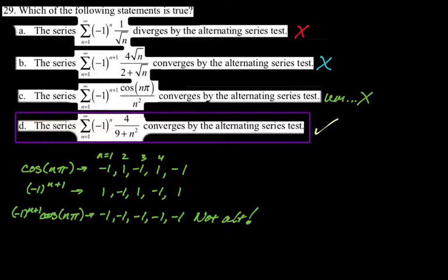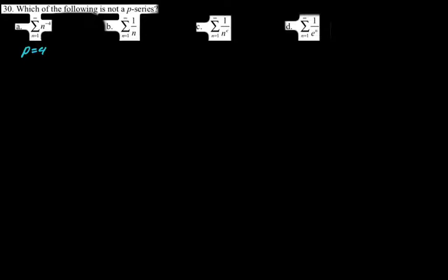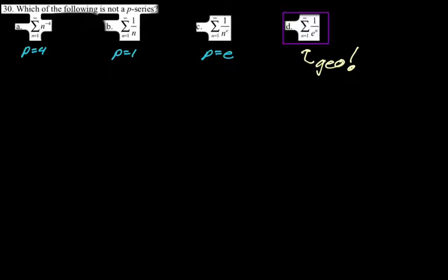Next: which of the following is not a P-series? P = 4, yes. P = 1 — that's the harmonic series, but the harmonic series is a P-series. 1 over N to the E — insane, but it is a P-series where P = E, and E > 1 so it converges. And 1 over E to the N is geometric, not a P-series — that's the answer.